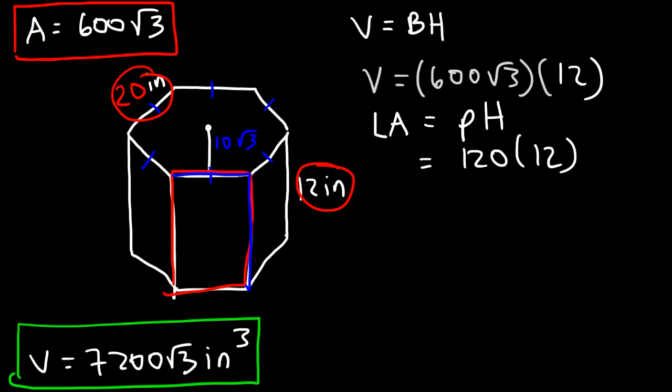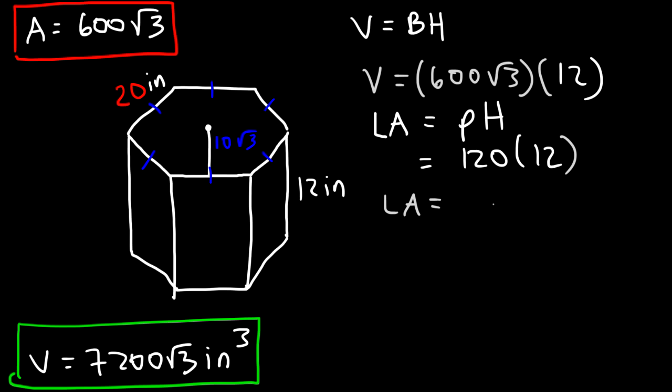It's not drawn to scale, but 20 times 12 is 240, and then you multiply by 6 because there are six faces. So the lateral area is 1440. 120 times 12 also gives you 1440, so that's the lateral area for the hexagonal prism: 1440 square inches.